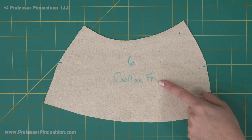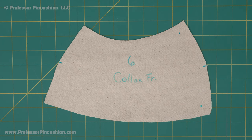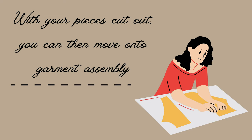After you cut out a piece, if you need to, use fabric chalk or marker to label the piece to make assembly easier. Once all the pieces are cut, then you can get to garment assembly.